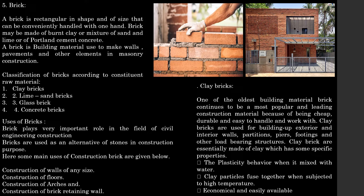Classification of bricks according to constituent raw material: one is clay brick, second is lime sand brick, third is glass brick, fourth is concrete brick. Brick plays a very important role in the field of civil engineering construction. Bricks are used as an alternative to stones. Main uses of brick: for wall construction, for floor construction, for arch construction and for brick retaining walls.